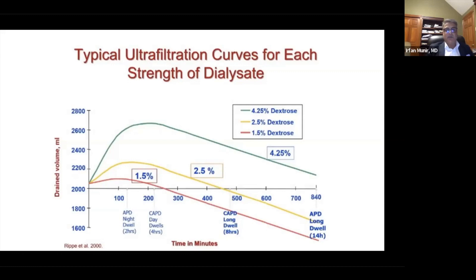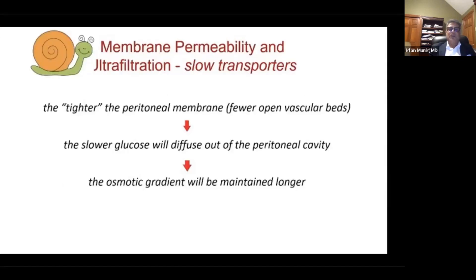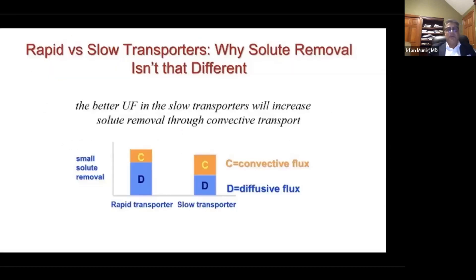The amount of ultrafiltration seen at two hours, four hours, eight hours, and fourteen hours is outlined. With 1.5% dextrose, we obtain a plasma sample at baseline, and the ratio of substances at four hours is measured. In slow transporters, glucose diffuses out of the peritoneal cavity more slowly, maintaining the osmotic gradient longer. This preserves ultrafiltration ability for a longer period, allowing slow transporters to remove solutes via both diffusion and convection.